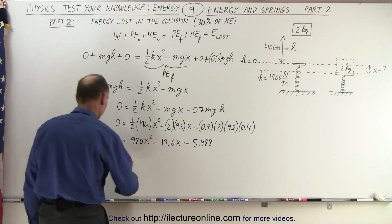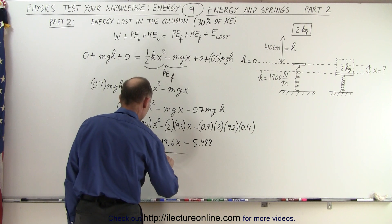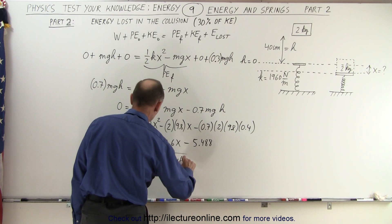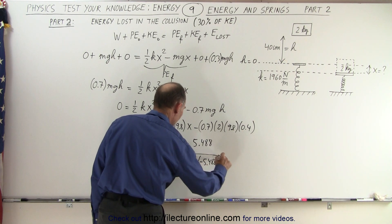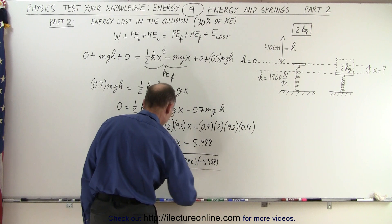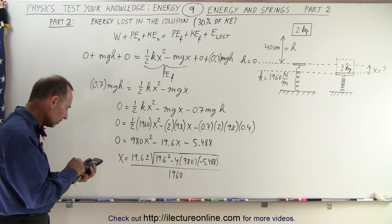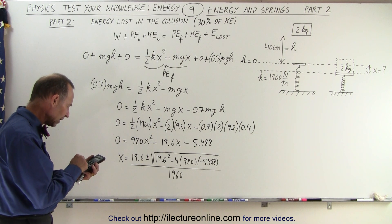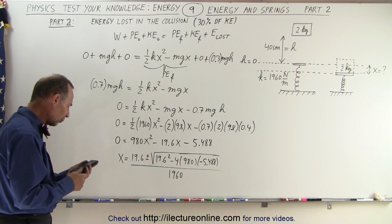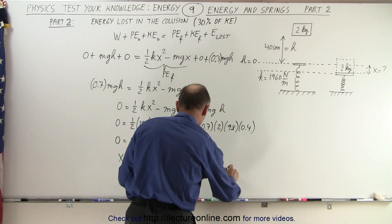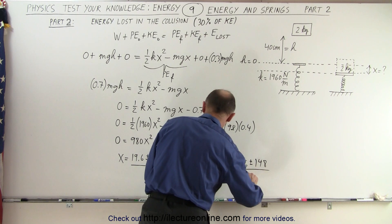Now we solve the quadratic equation. x equals negative B, which is 19.6, plus or minus the square root of 19.6 squared minus 4 times A, which is 980, times C, which is negative 5.488, all divided by 2 times 980, which is 1960. Computing the discriminant: 4 times 980 times 5.488 plus 19.6 squared, then taking the square root, gives 148.